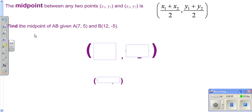Let's take a look at midpoint. Midpoint is really just the average of the x's and average of the y's. To find your midpoint, you take your two x coordinates, add them together, divide by 2. Take your two y coordinates, add them together, divide by 2.